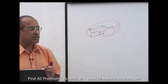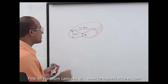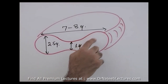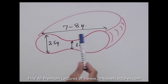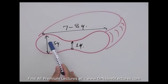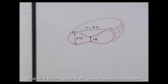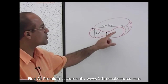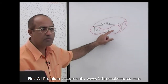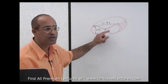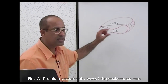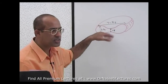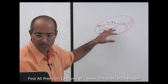RBC mainly consists of cell membrane, some proteins associated with the membranes, and a lot of hemoglobin inside. RBC has extra membrane compared to its content. The advantage of this extra membrane is that it forms a biconcave disc, so the surface area is greater, allowing hemoglobin to exchange gases easily.